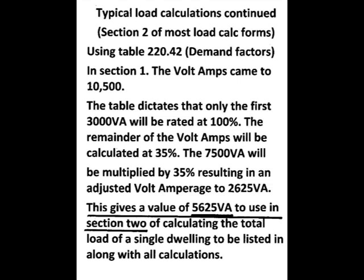Going to section 2, using table 220.42 demand factors — in section 1 the volt amps came to 10,500. The table dictates that only the first 3,000 volt amps will be rated at 100%. The remainder of the volt amps will be calculated at 35% — that's very low. The 7,500 volt amps will be multiplied by 35%, resulting in an adjusted volt amperage of 2,625 volt amps. This gives you a total value of 5,625 volt amps to use in section 2 of coming up with the total.